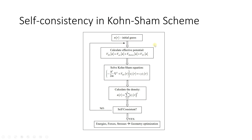Once you have calculated the effective potential, you plug this value into the Kohn-Sham equation and solve it. After solving the Kohn-Sham equation, you calculate the resulting electron density.